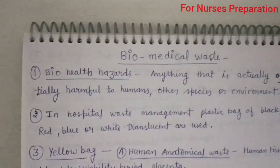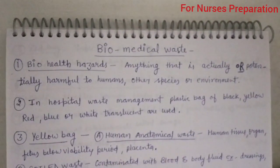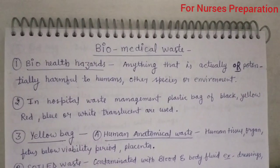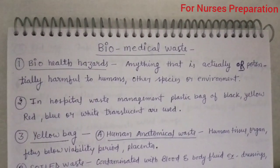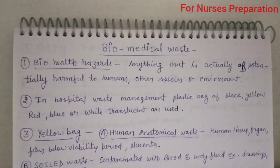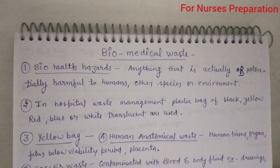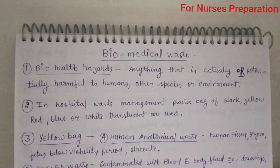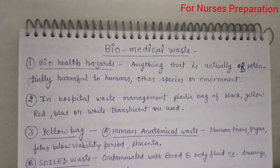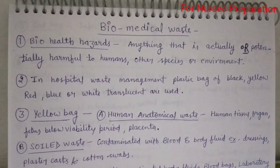Point number one: Bio-Health Hazards. Anything that is actually or potentially harmful to humans, other species, or the environment is known as a Bio-Health Hazard. Any substance that is harmful to humans, other species, or the environment is known as a Bio-Health Hazard.